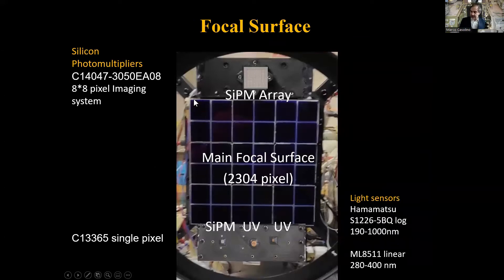The focal surface zoomed, before we put the lenses during integration. In addition to the UV pixels made by multi-anode photomultiplier pixels, there is an 8x8 silicon photomultiplier C14-047, and there are a number of UV sensors and silicon single-pixel silicon photomultipliers that we use to decide whether it's day or night, therefore whether to shut off everything or not in the acquisition.